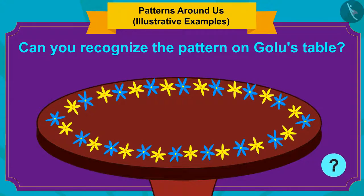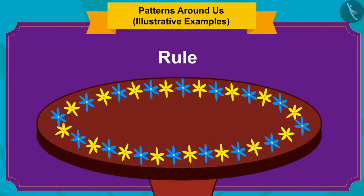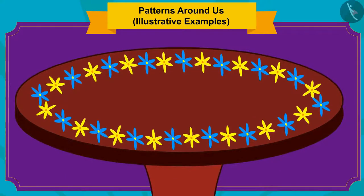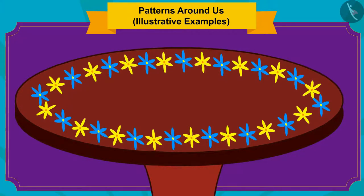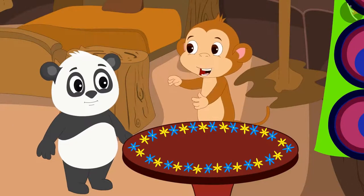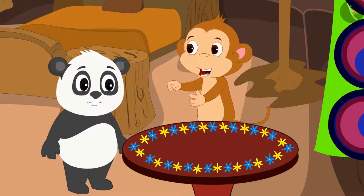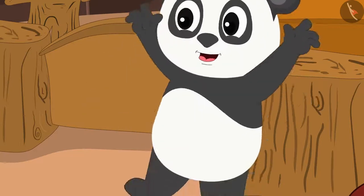If you want, you can stop the video and find the answer. Children, in order to identify the rule of any pattern, you just have to see what is being repeated in that pattern. Here, a group of yellow flowers and blue flowers is formed, and then a pattern is made by repeating this group again and again. Babban also explained to Golu how he could find the rule of this pattern. Golu became very happy learning about finding patterns.